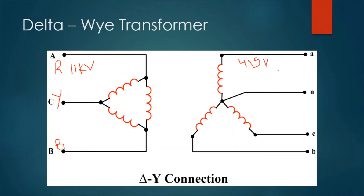The secondary side of this transformer is 415 volts, which will be connected to our devices and appliances. We notice that the secondary side has four terminals instead of three. These terminals are used for phases R, Y, and B, and the fourth terminal is for the neutral line, which is connected to the common point of the R, Y, and B phases. In other words, this transformer is actually converting a three-wire system to a four-wire system that can be utilized in our homes for different devices. If we measure the line-to-line voltage from R to Y phase, we will get 415 volts.